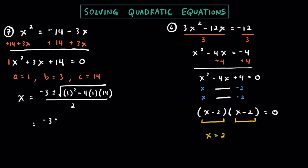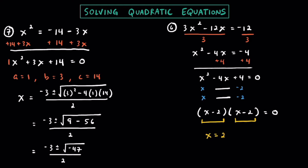Substituting into the quadratic formula, x equals negative 3 plus or minus the square root of b squared — that's 3 squared — minus 4ac, so minus 4 times 1 times 14, all over 2a which is just 2. We have negative 3 plus or minus the square root of 9 minus 56, which is minus 56. Simplifying a bit more, that gives us negative 3 plus or minus the square root of negative 47, all over 2.